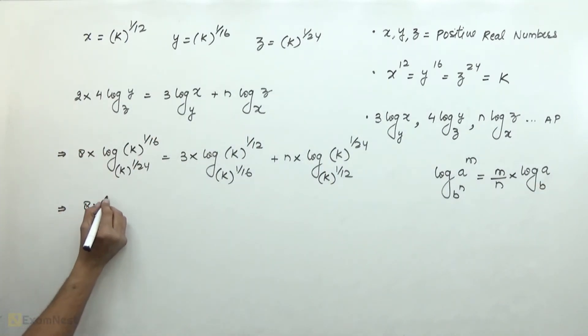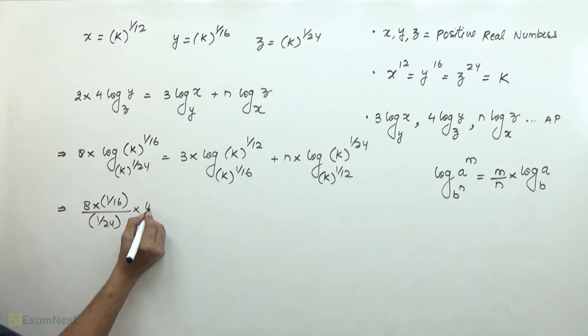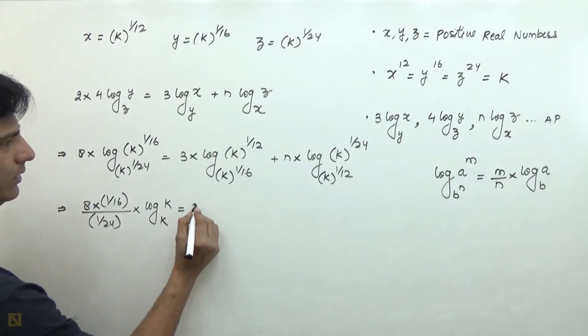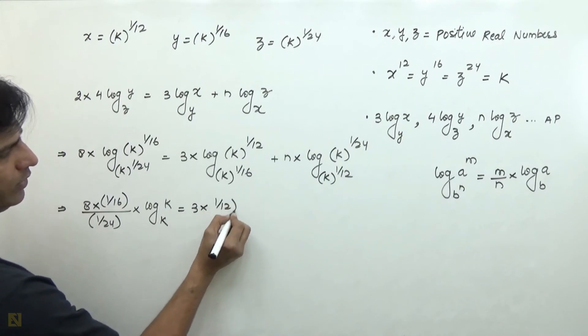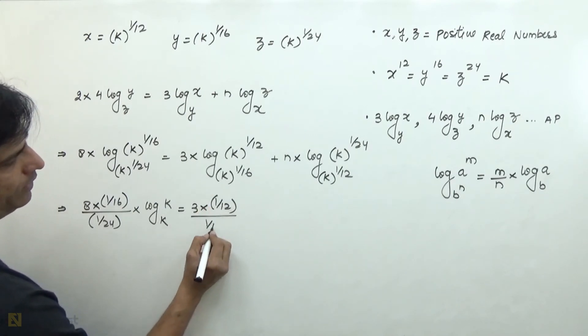So if we apply the same property here, we get 8 into 1 over 16 divided by 1 over 24 into log of k to the base k, equals 3 into 1 over 12 divided by 1 over 16